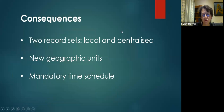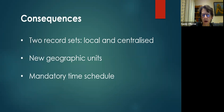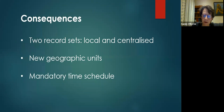The consequences of the way these records were created are threefold. As we've said, there were two record sets — the local and the centralized records. They created new geographic units, which had consequences because an area might be known by its parish name or village, but the civil records would be organized around the registration districts and the superintendent registrar's districts. And it was mandatory with a time schedule — something people had to do, which was quite significant in the early years.